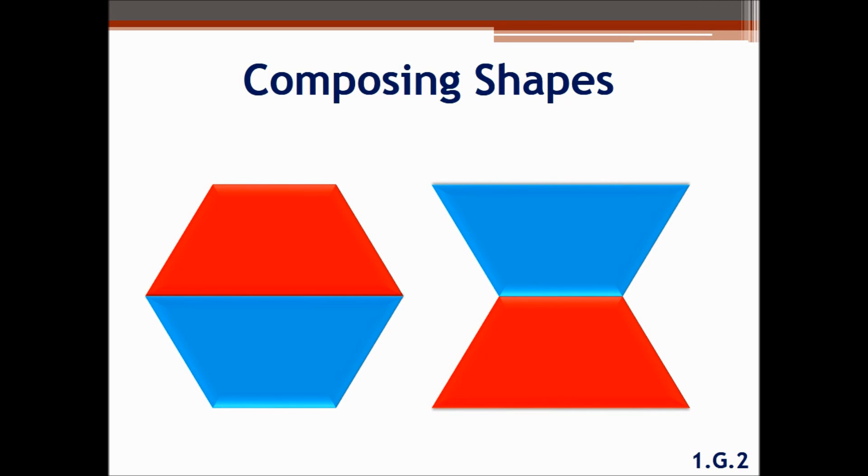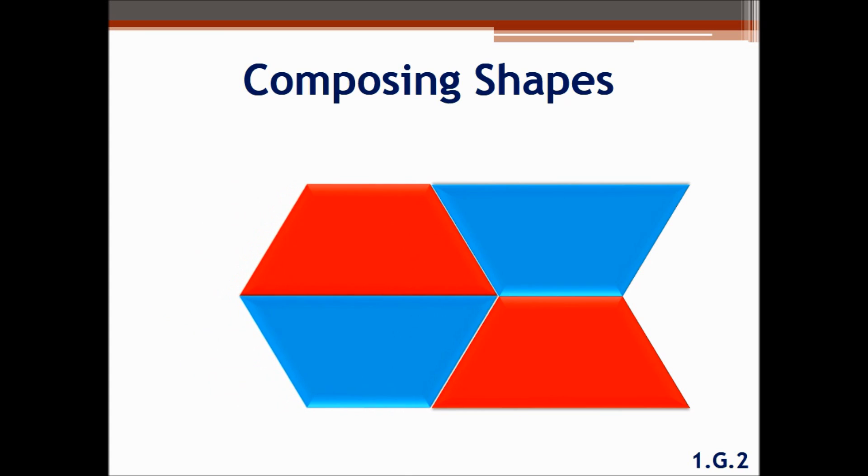The second part of this standard asks students to put together two composite shapes to make a new shape. Again, this may or may not have a familiar name to students. While this seems like a simple standard, it is so important. This helps students build an understanding of part-part relationships, builds visual-spatial skills, and develops puzzle-solving skills.